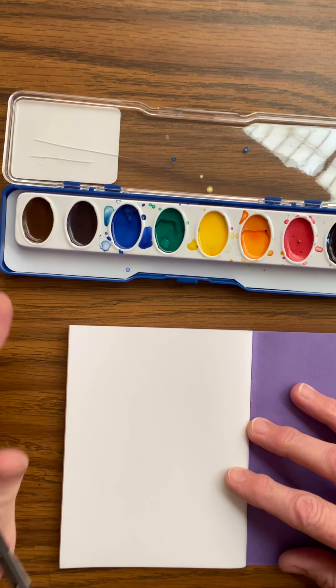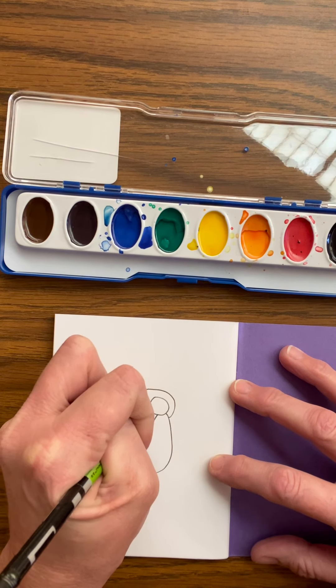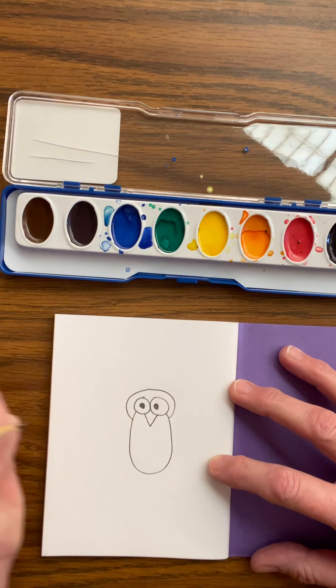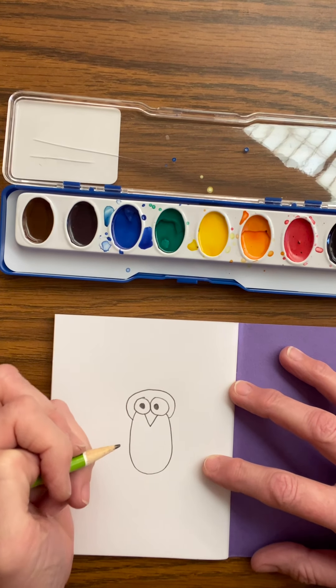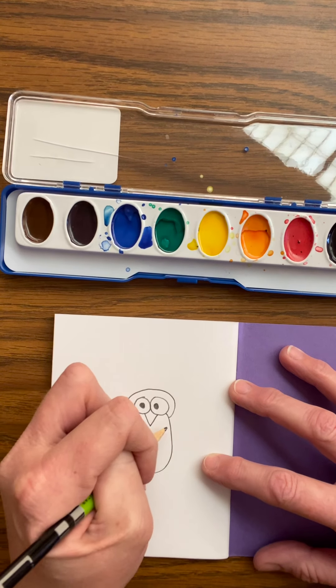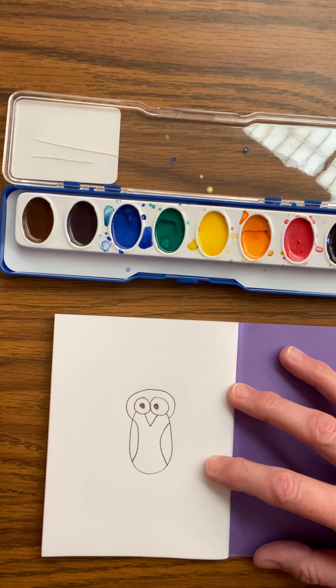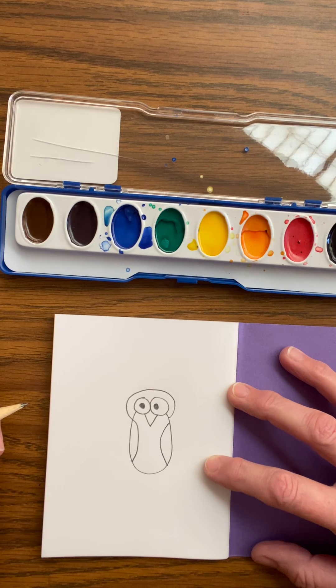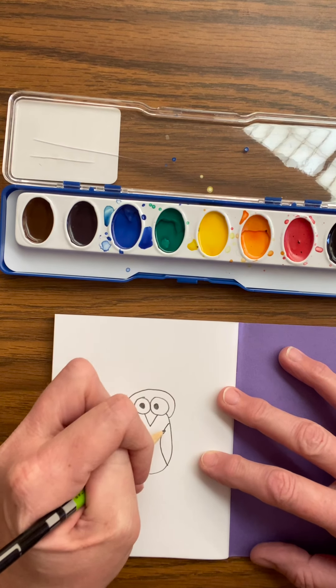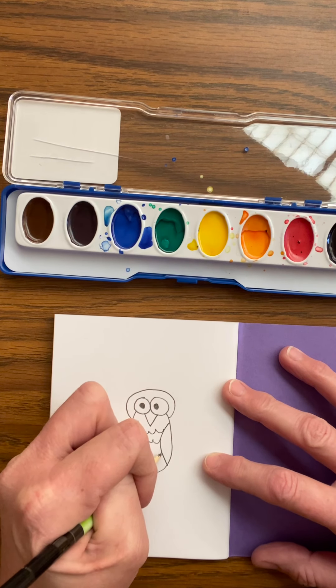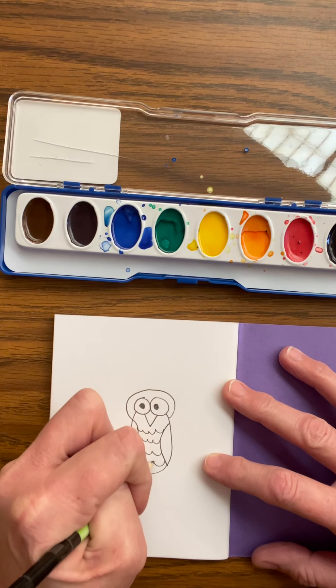We're gonna give our peacock a beak so that he can smell and talk and maybe eat some lunch. We're gonna add some eyeballs so he can really see. Mine's kind of looking off to the right a little bit. And next, we're gonna add what looks like parentheses, only backwards. And I bet you've already figured out we're gonna add one here too. We're also going to include some feathers that usually end up layered on the peacock's chest and tummy. They look a little like ocean waves.